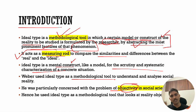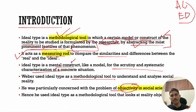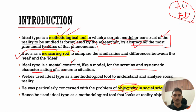Weber used ideal type as a methodological tool to understand and analyze social reality. He was particularly concerned with the problem of objectivity in social research. Earlier thinkers — Auguste Comte, Herbert Spencer, Emile Durkheim, and even Karl Marx — all wanted to establish sociology as a scientific discipline. They said subjectivity should have no role in sociology; the researcher's personal values and biases should not affect the study.